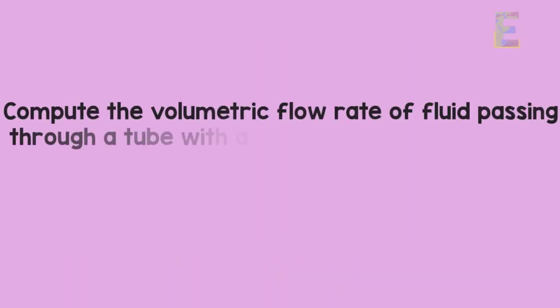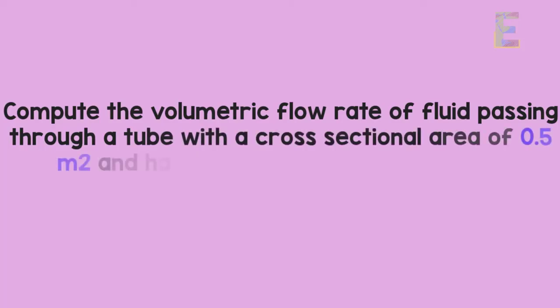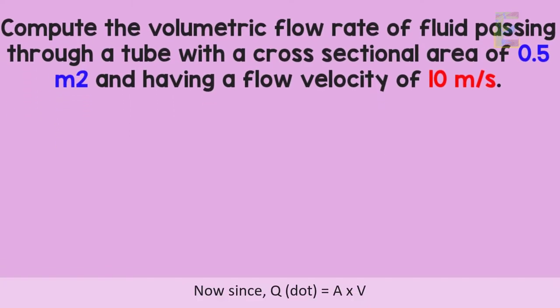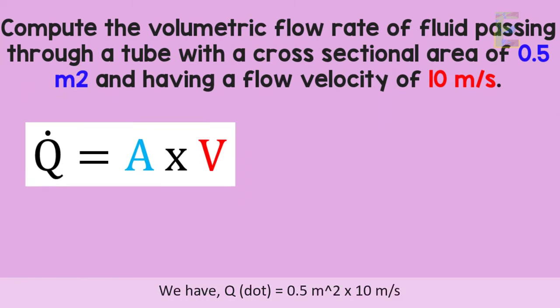The tube has a cross-sectional area of 0.5 square meters and a flow velocity of 10 meters per second. Now since the formula is Q̇ = A × V, we have Q̇ = 0.5 m² × 10 m/s.